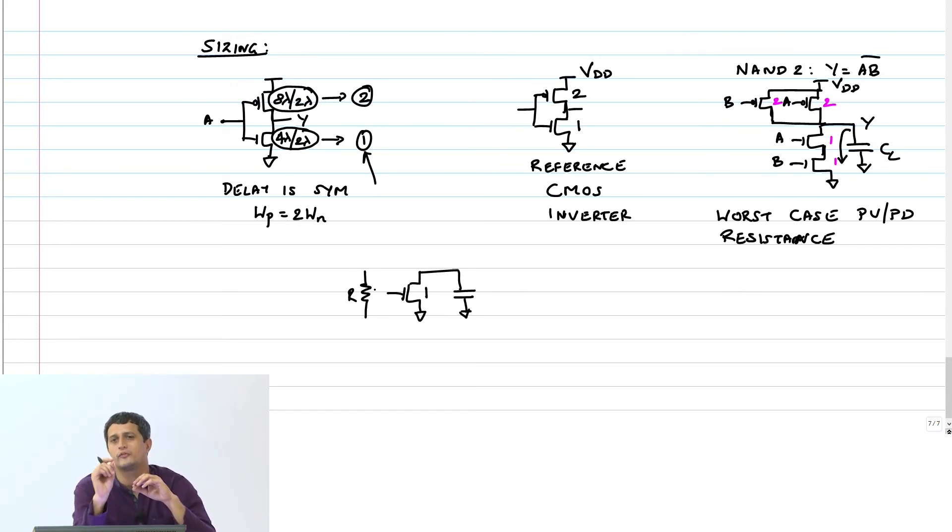Then the resistance we calculated for this NMOS was some R. I am going to call it R. Now if a unit NMOS has resistance R, what will be the resistance of an NMOS with twice the width? R by 2, exactly. Why is that? Let us look at that. R was basically 3VDD by 4ID,sat. This is the expression we got.